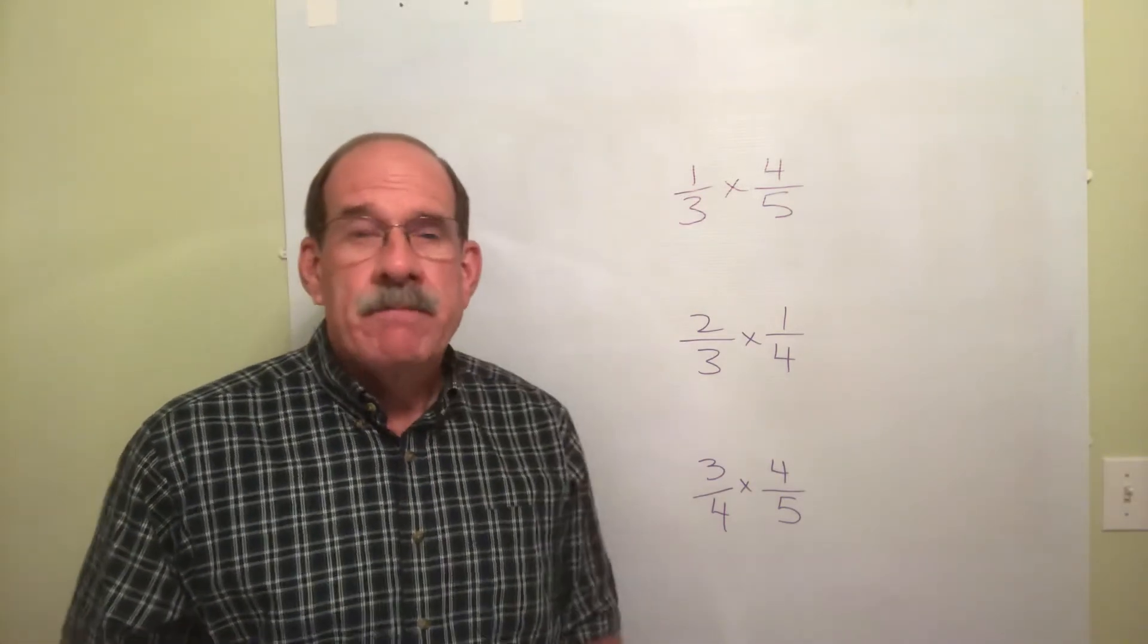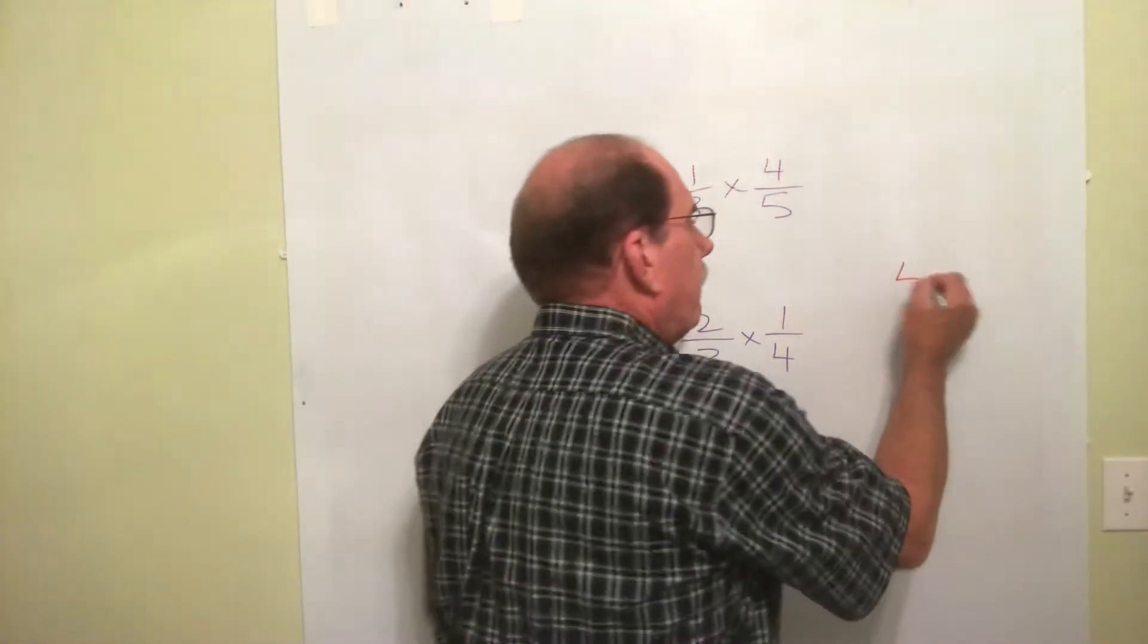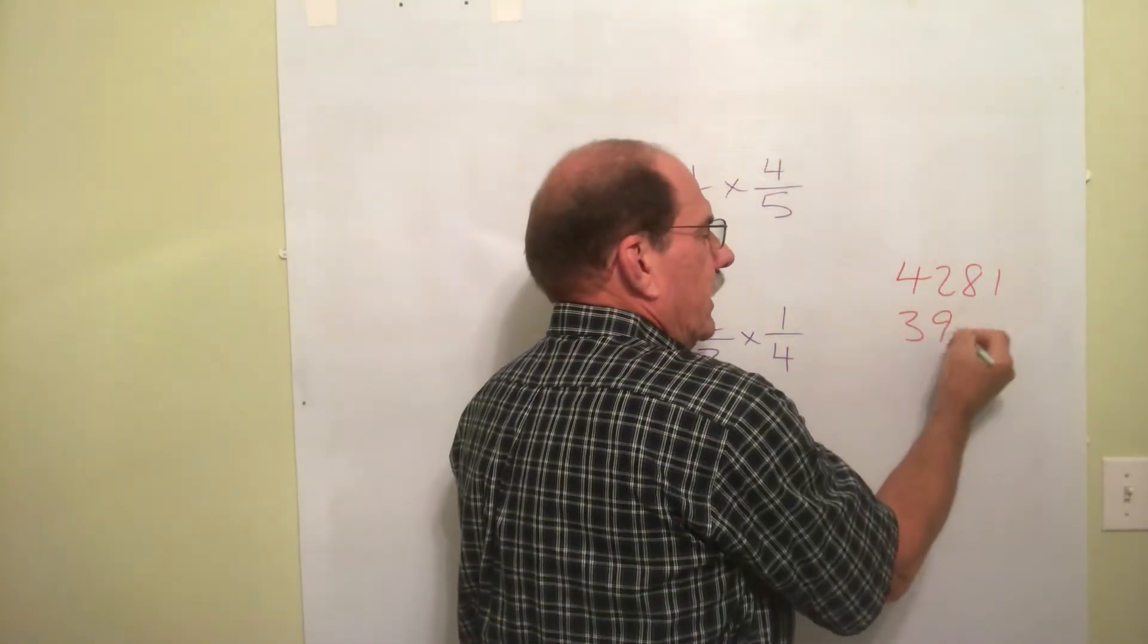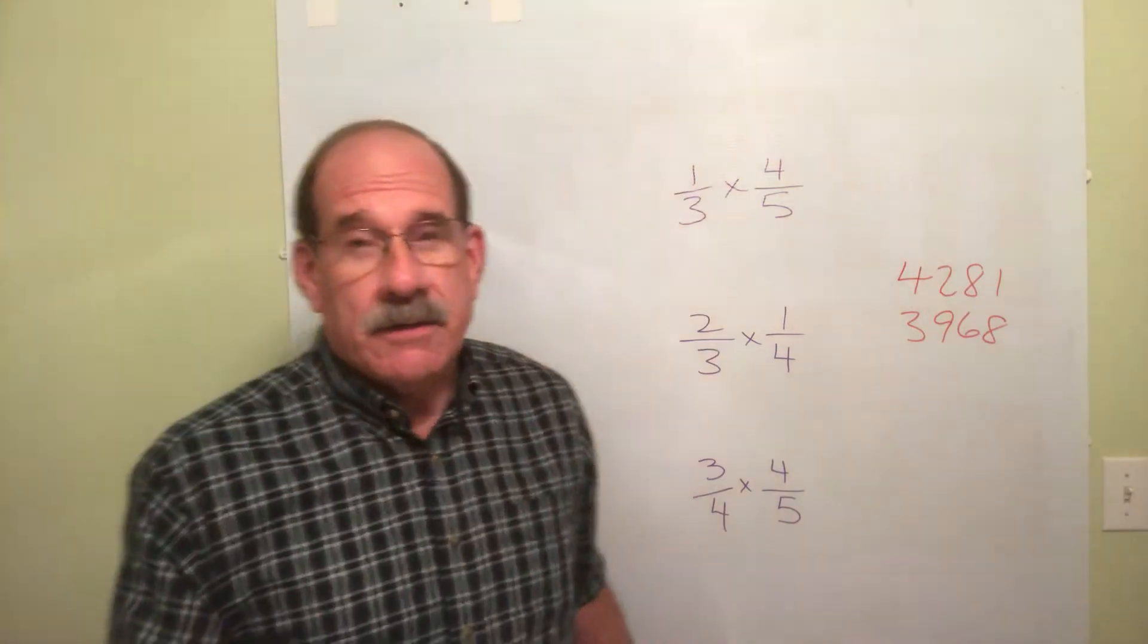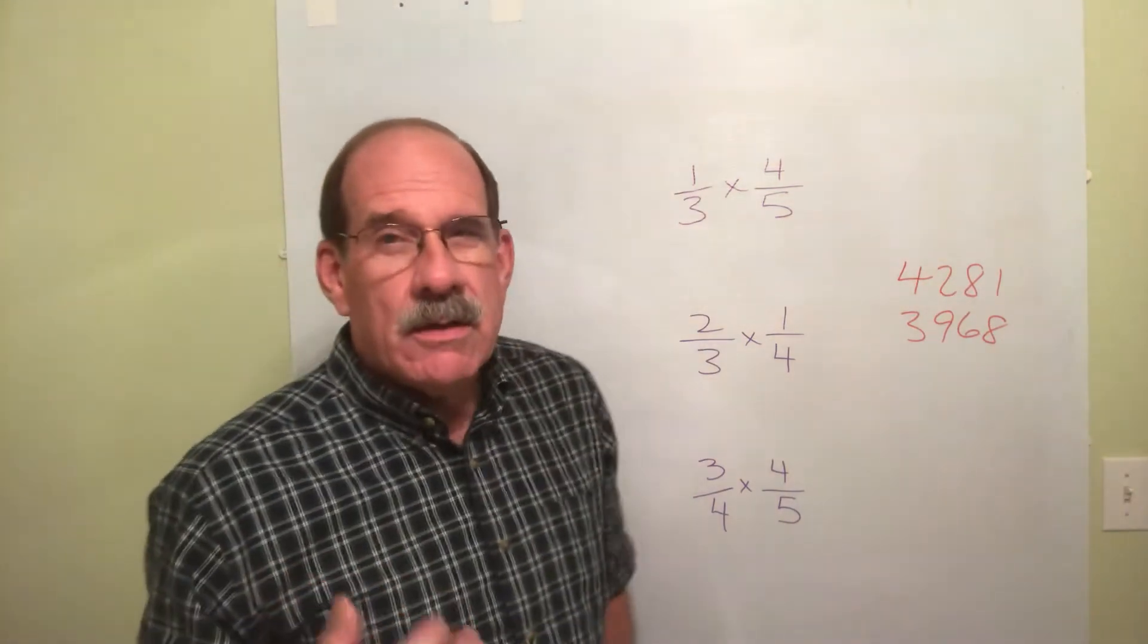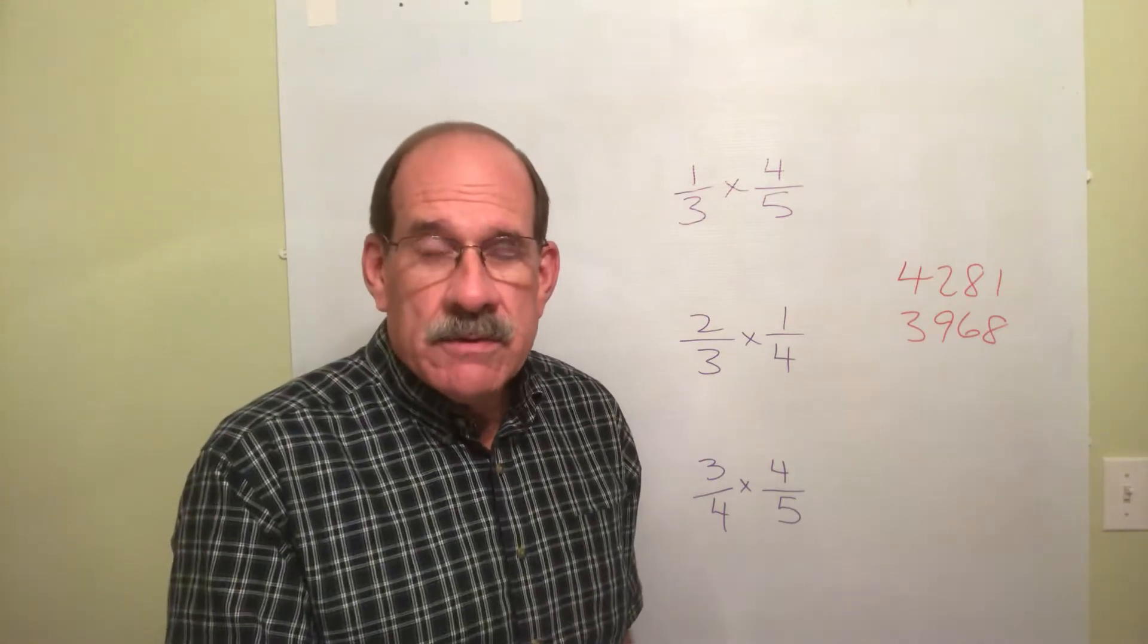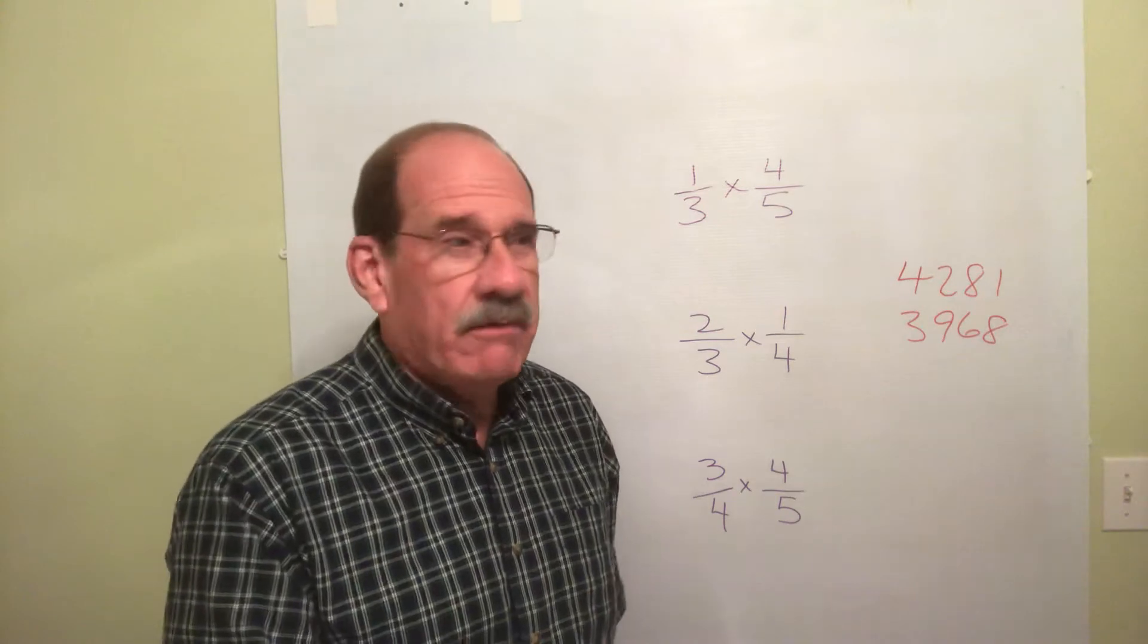Now, just a quick note here. If I were to give you some big numbers, let's say 4,281 and 3,968, and without a calculator, just you, your brain, your pencil and paper, I were to give you four choices: add those two numbers, or subtract those two numbers, or multiply those, or divide those.